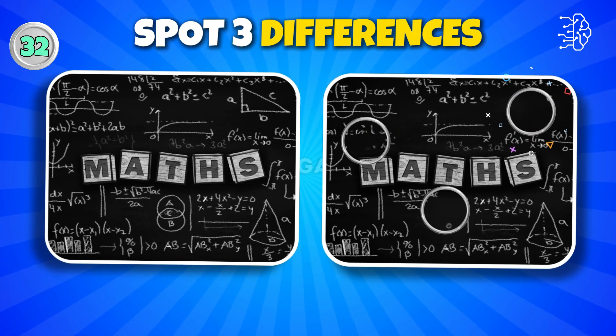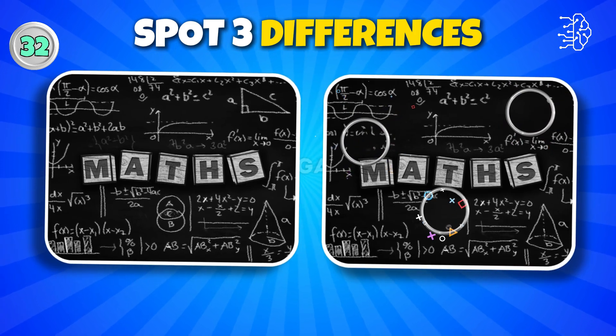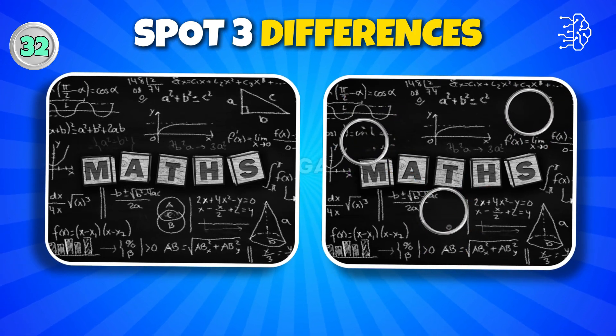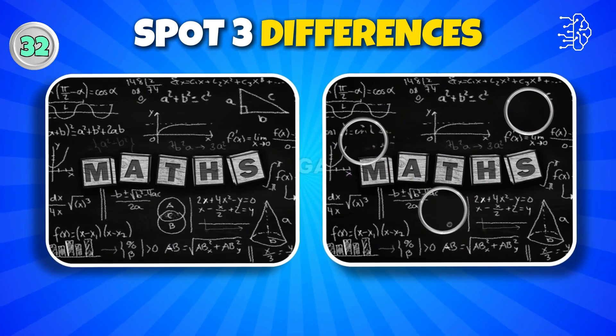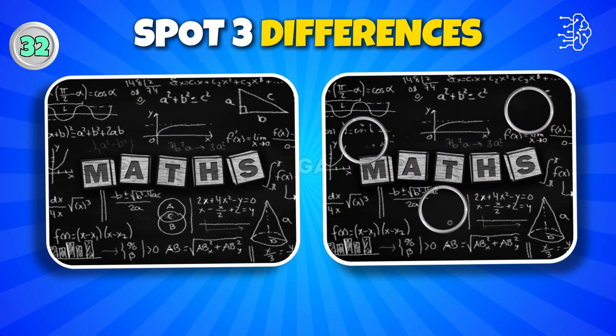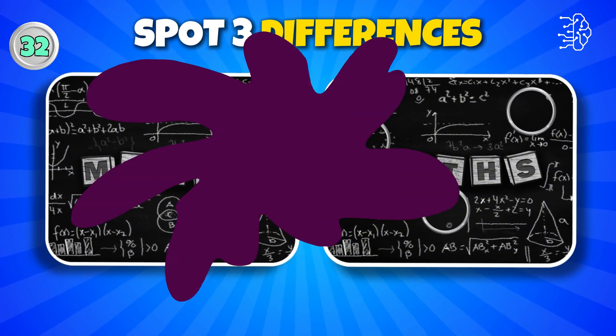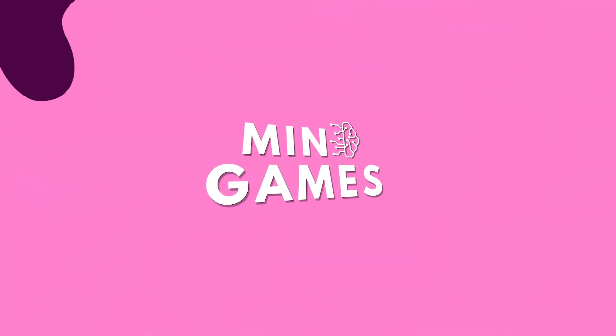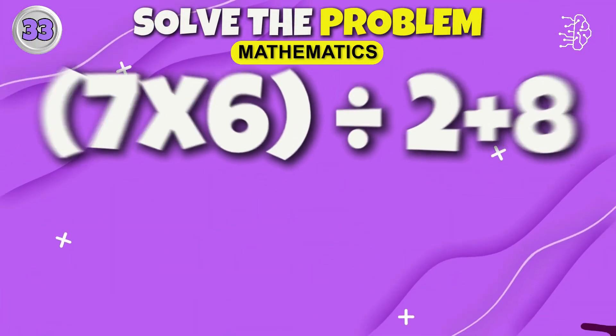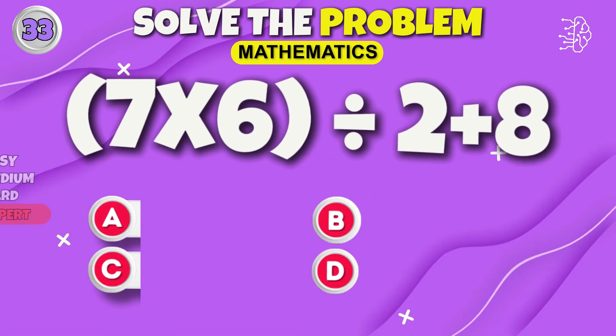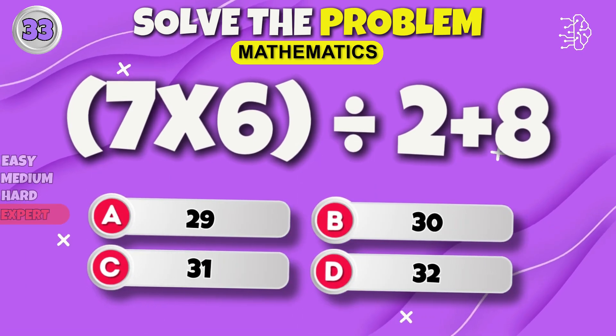One, two, three — how many did you spot? If you have spotted all three, then you are a genius. Keep going.